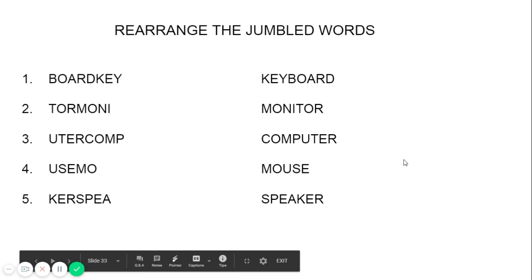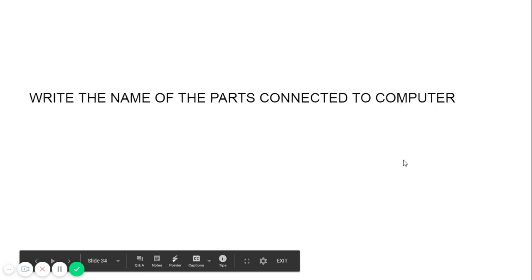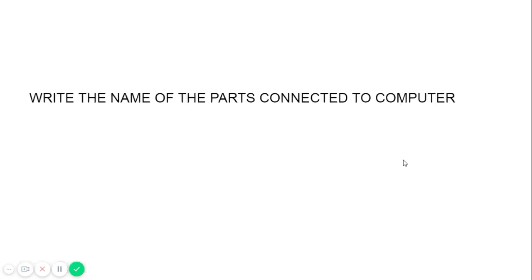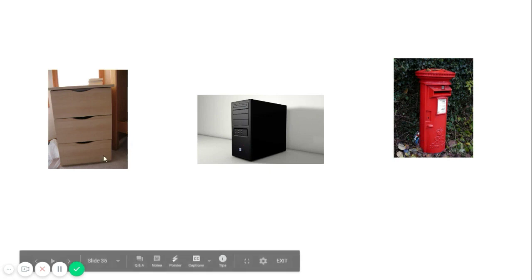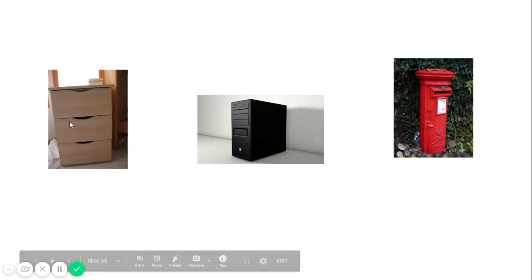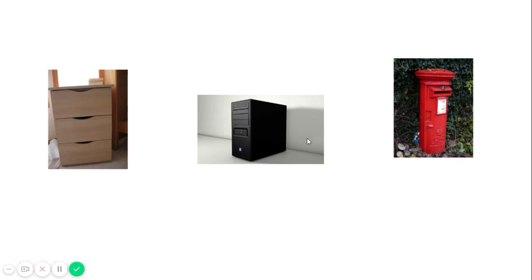Shall we move on to the next slide? Now, write the name of the parts connected to the computer. Three pictures are given: wooden drawer, CPU, and post box. Which one is connected with the computer? CPU is the right option. Next set: telephone, piano, and keyboard — which one is right?